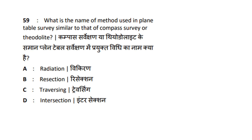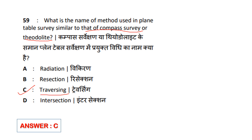What is the name of the method used in plain table survey similar to compass survey or theodolite? Options: Radiation, Resection, Traversing, Intersecting. We can use the traversing method. In compass survey and theodolite we use bearings; similarly in plain table we use traversing. So answer is option C — Traversing.